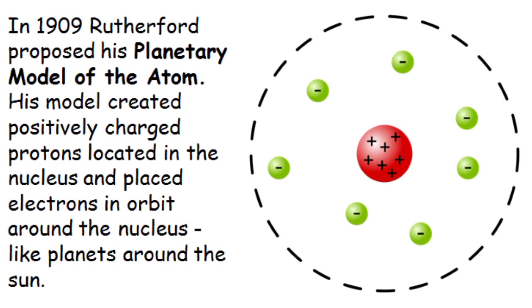In 1909, Rutherford proposed his planetary model of the atom. His model placed positively charged protons in the nucleus and placed electrons in orbit around the nucleus, like planets around the sun.